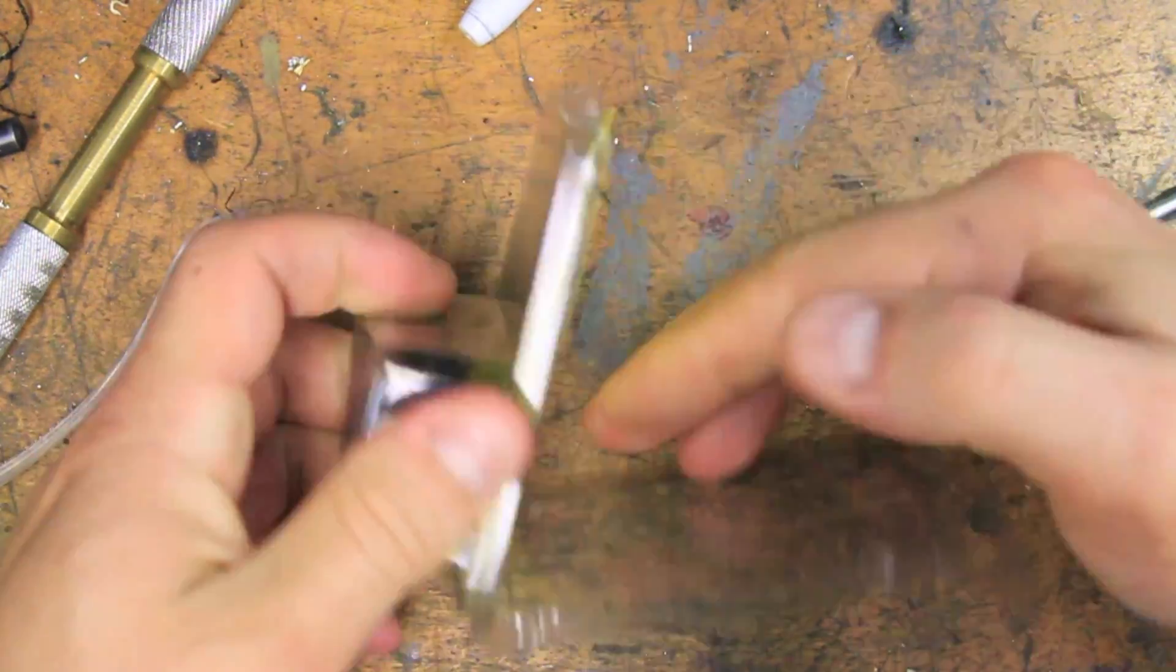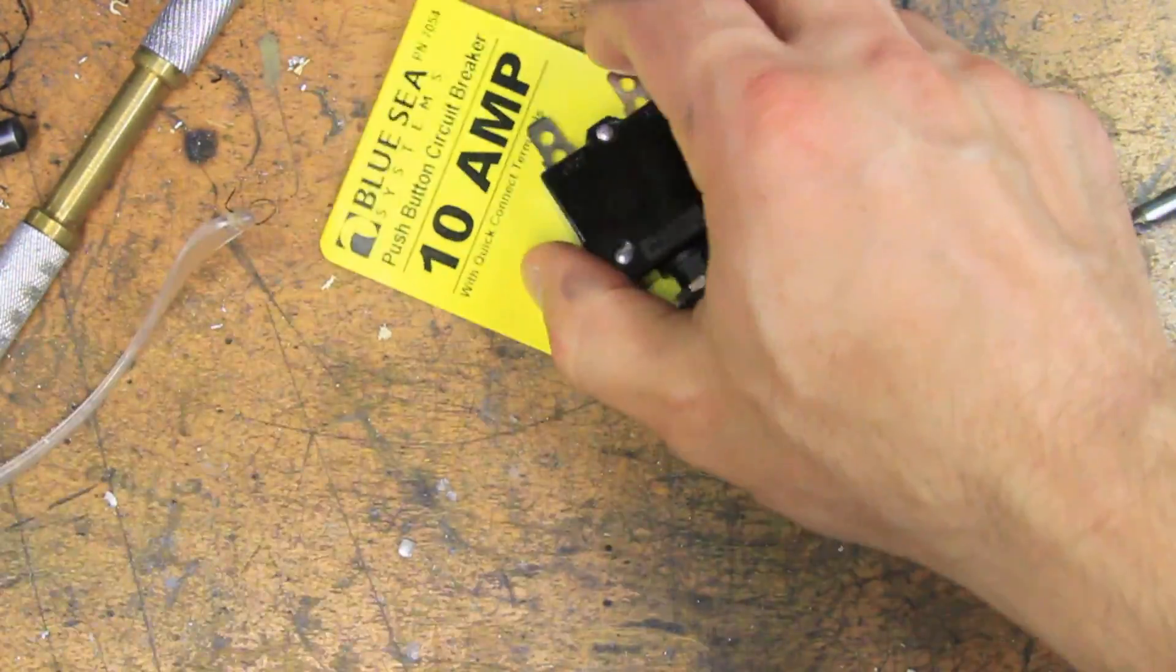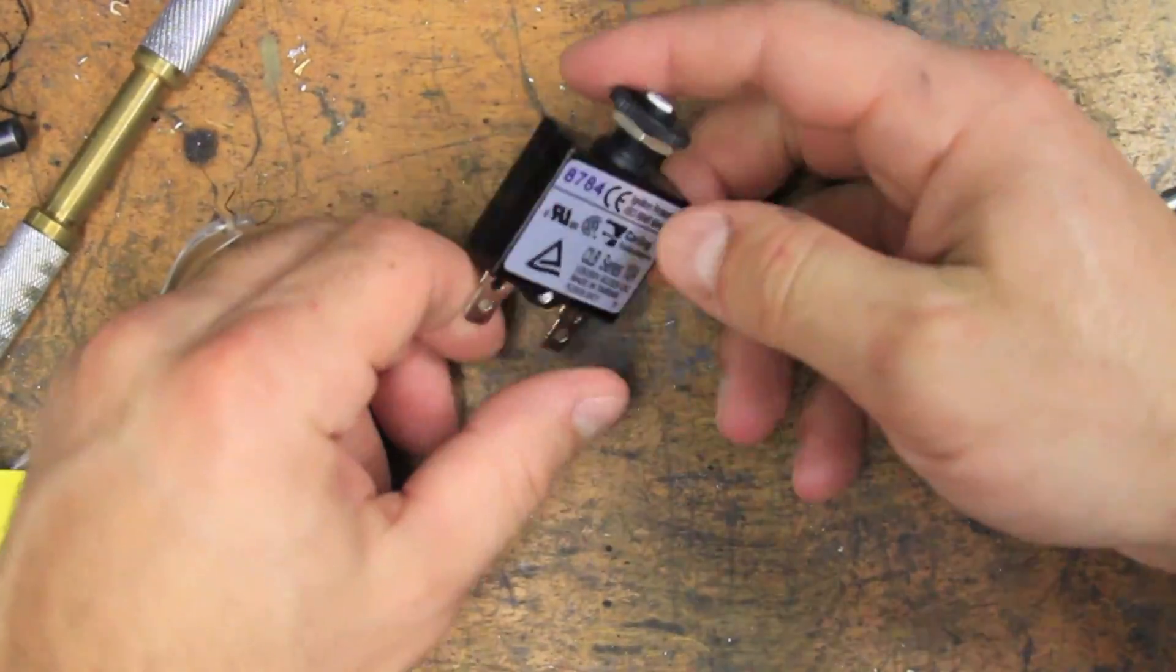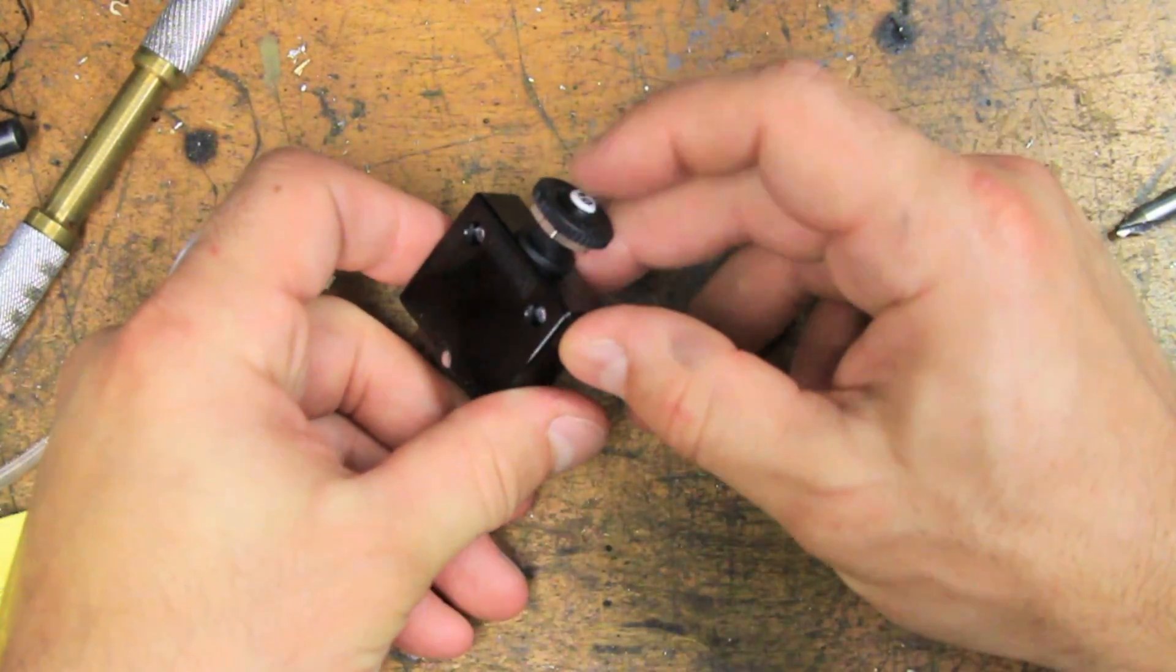So I found a small, 10-amp, 250-volt button-style circuit breaker that fits in the same hole as the fuse holder and doesn't need replacing when it trips.